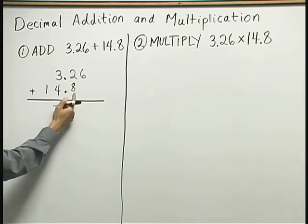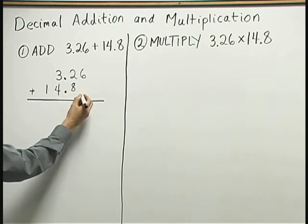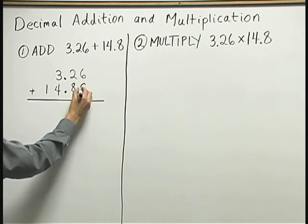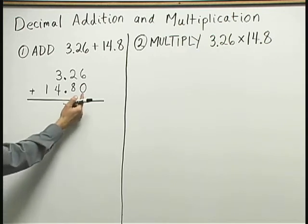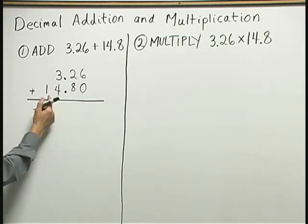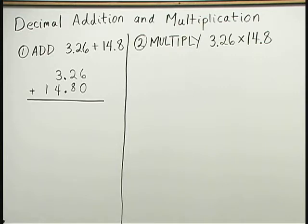If you like, after the 8, you could write a 0. You don't have to, but if it makes it easier for you to work with these two decimals, go ahead and write this 0 in the hundredths place. 14.80 is equal to 14.8. That's the same decimal number.